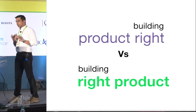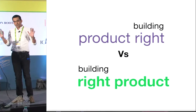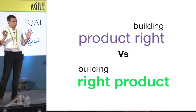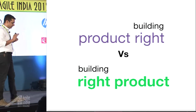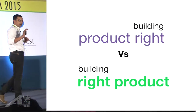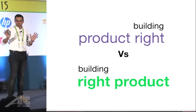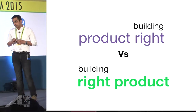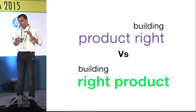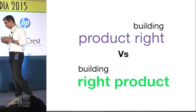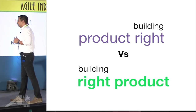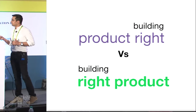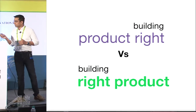Without a shadow of doubt, I can say that these products were built rightly — the quality was amazing. Vista was a separate example, let's keep it aside. But apart from that, all of the products were certainly built rightly, in the sense that some of the best technological brains worked on them. Still they failed. So we need to clearly understand the key difference between building the product right and building the right product.